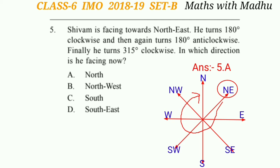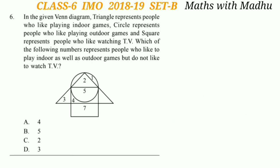So the answer will be option A. Now question 6. In the given Venn diagram, the triangle represents people who like playing indoor games, the circle represents people who like playing outdoor games, and the square represents people who like watching TV. Which number represents people who like to play indoor as well as outdoor games but do not like to watch TV? The numbers within the triangle and circle are 2 and 5, but 5 is present within the square, so the number will be 2. The answer will be option C.